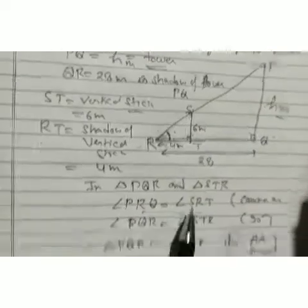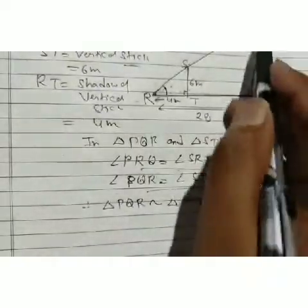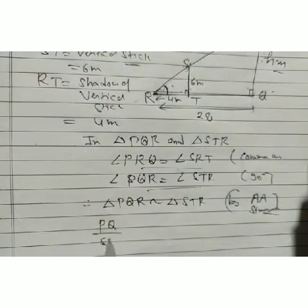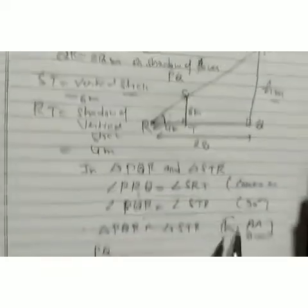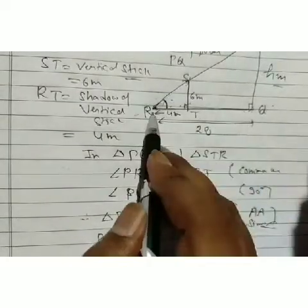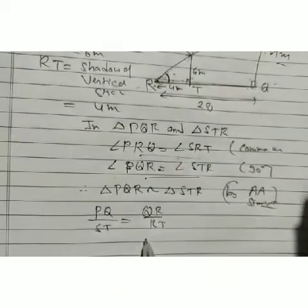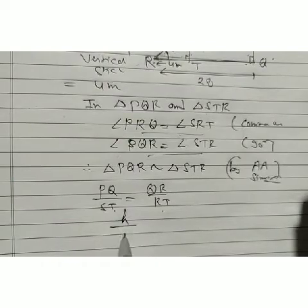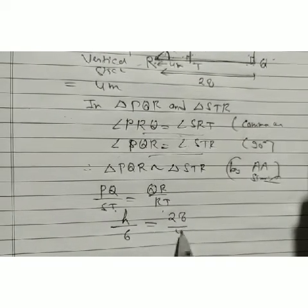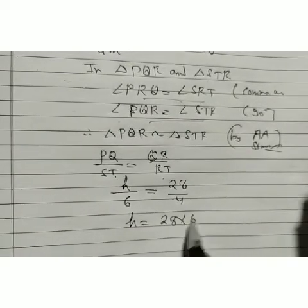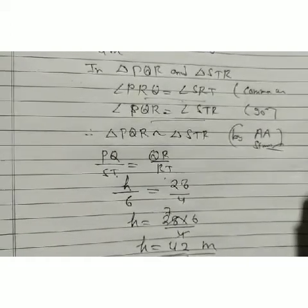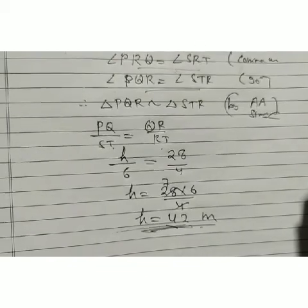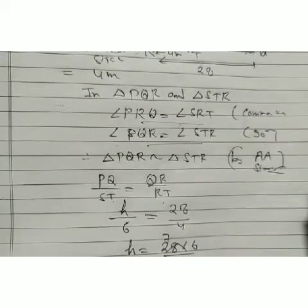Substituting values: H/6 = 28/4. So H = 6 × 28/4 = 6 × 7 = 42 meters. Therefore the height of the tower is 42 meters. This concludes our problems on similarity of triangles.